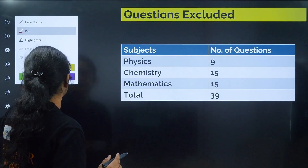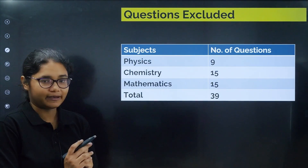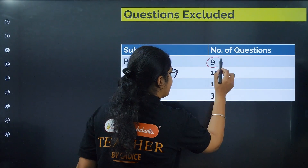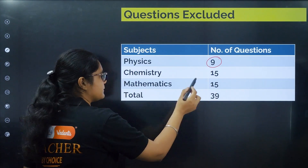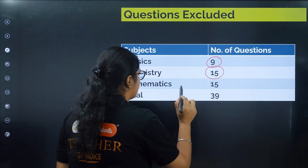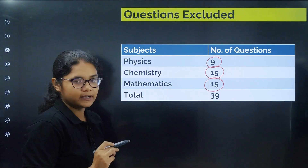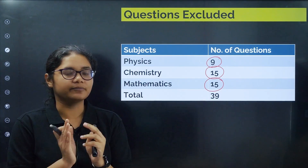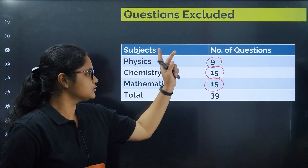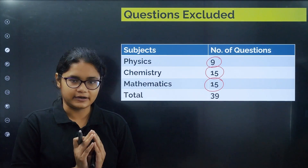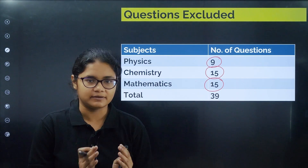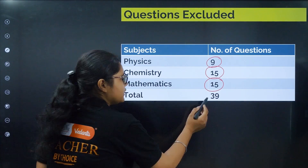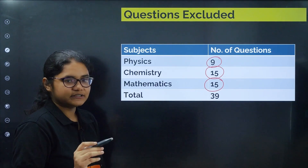This year in KCET 2024, if you see, in Physics 9 questions were excluded, in Chemistry 15 questions were excluded, and in Maths 15 questions were excluded. These were questions which came from the deleted portion of the syllabus, so they will not be evaluated — as per the notice from KCET. That gives us a total of 39 questions which are deleted.